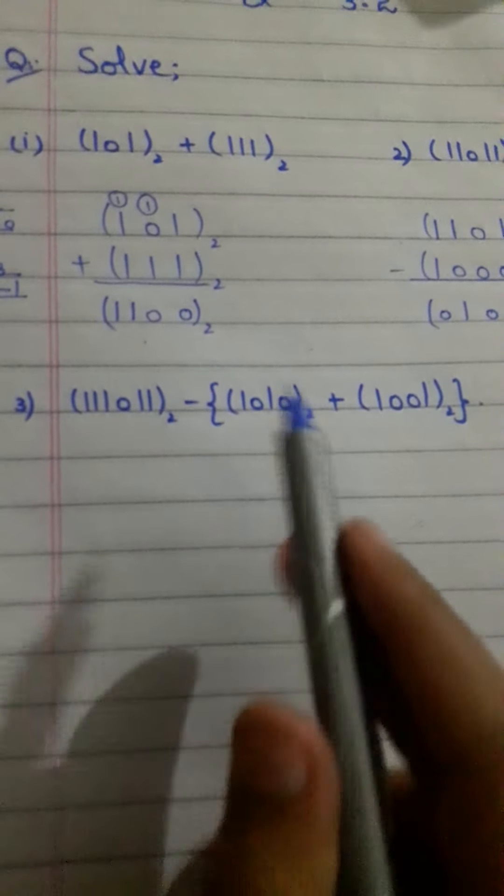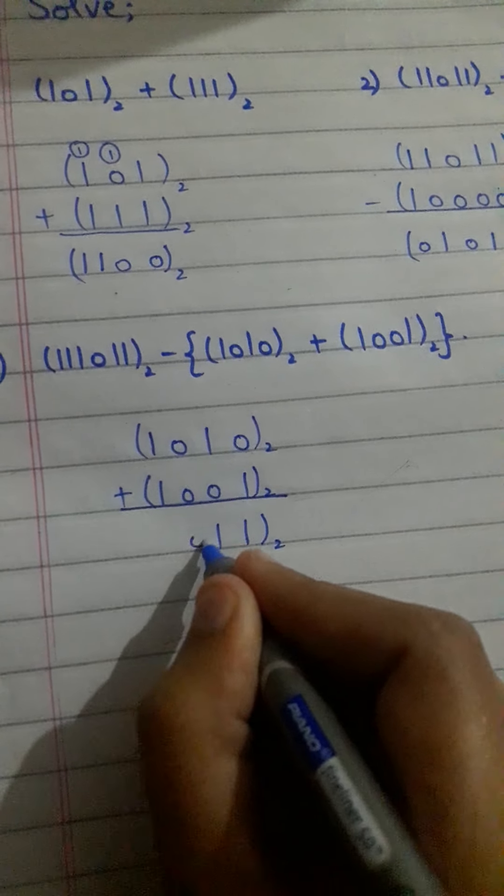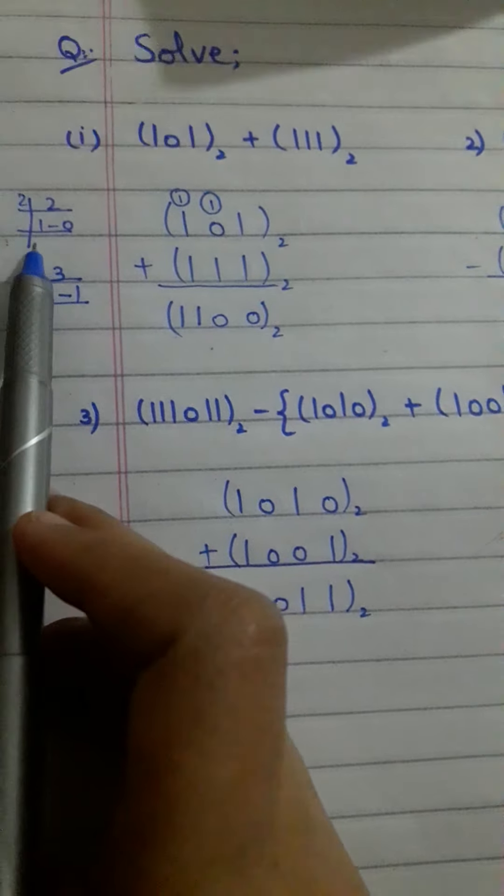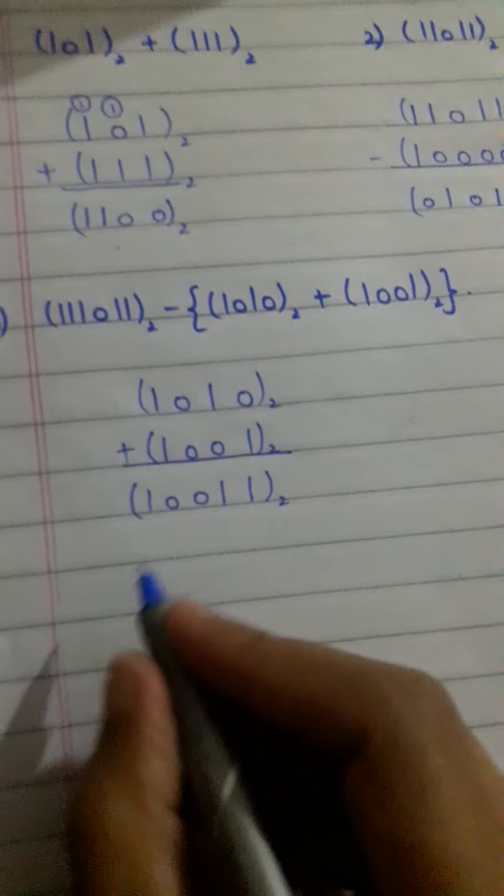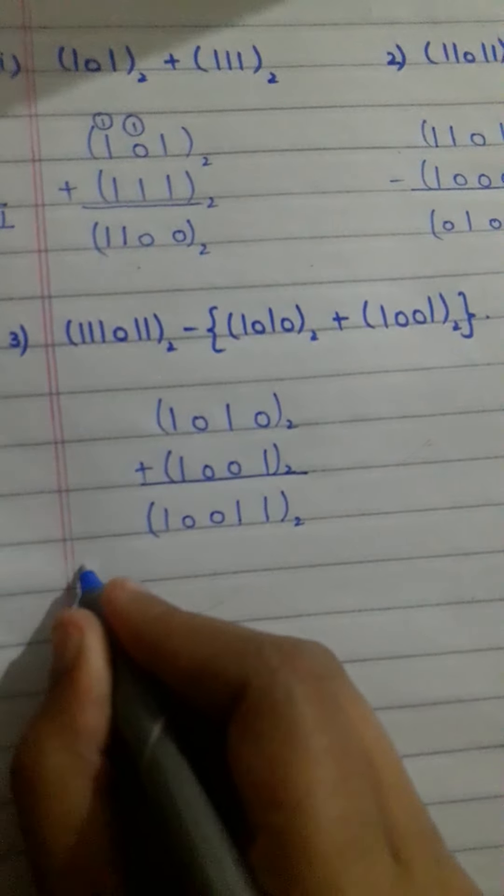Now look at this question. When we work through this subtraction question, where we have a borrow situation, we get 0 and 1. So we have 0 here and 1 here. Clear? The subtracted answer gives us 1, 1, 1, 0, 1, 1.